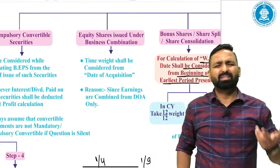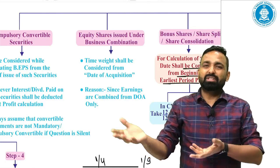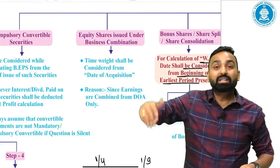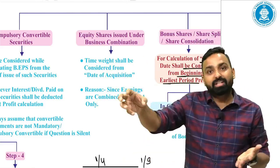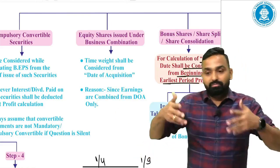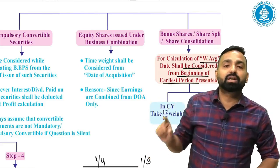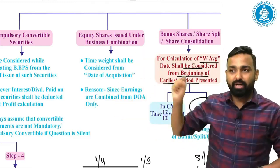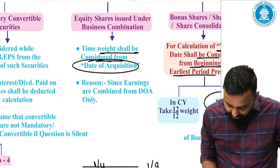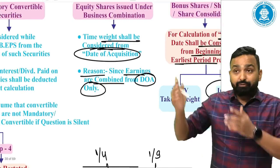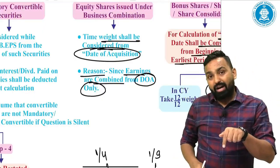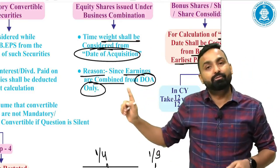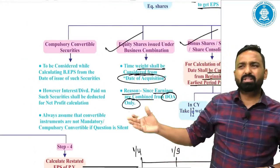Equity shares issued under business combinations: when an acquiring company issues shares as purchase consideration, those shares must be included in EPS. The time weight is taken from the date of acquisition - the date on which control was acquired. Since earnings are combined only from the date of acquisition, the new shares will be considered in basic EPS working but the time weight will be taken from the acquisition date.